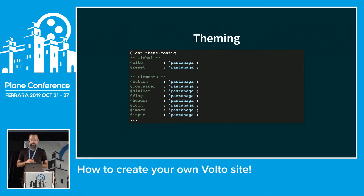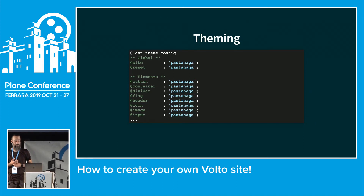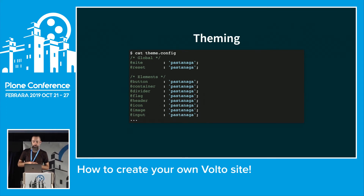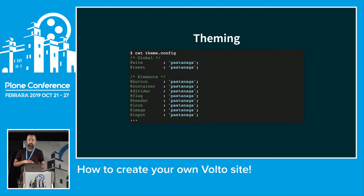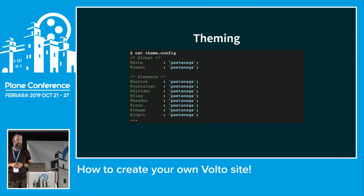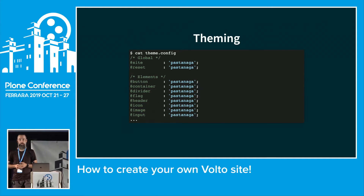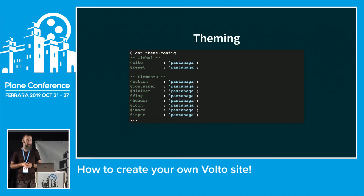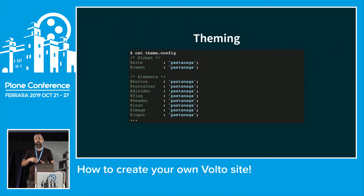When you start with the theme, there's just one file: theme.config. It configures which theme should be used for each specific part. By default everything points to Pastanaga. But if you find an external theme you prefer, you can use that, even per element — you could say buttons use one theme, containers use Pastanaga, icons use the default, etc.